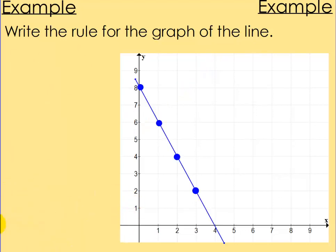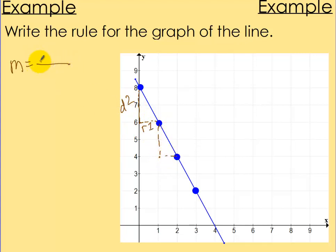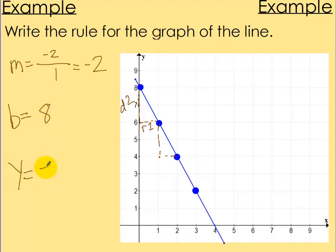Let's try another one. I want to figure out m first. It's going down 2, right 1. Since it's going down, I put negative 2 on top, and 1 on the bottom, so m equals negative 2 over 1, which simplifies to negative 2. For b, where it starts, that's right here at 8. So the formula is y equals negative 2x plus 8. That is your rule.